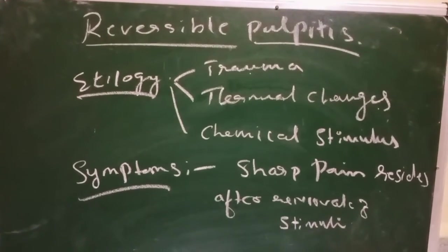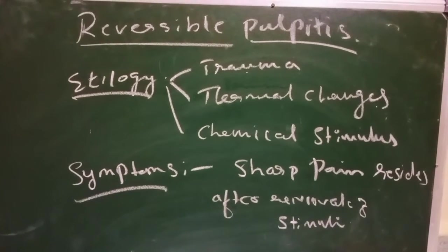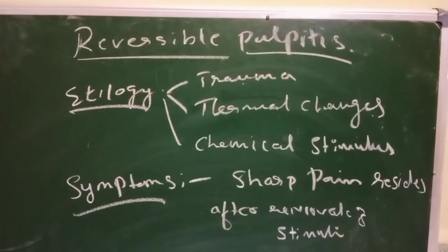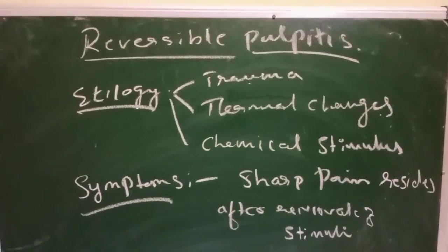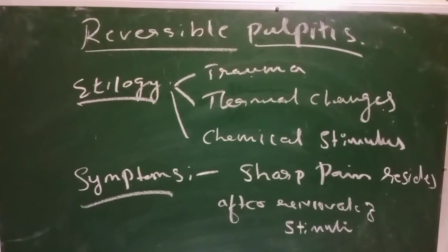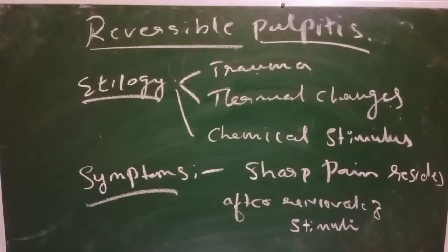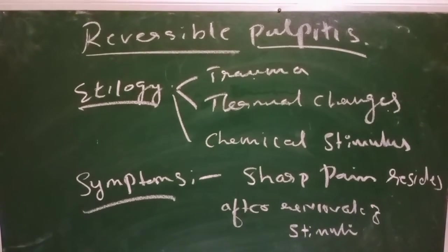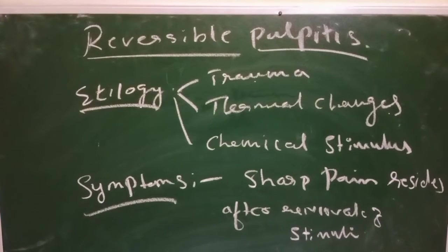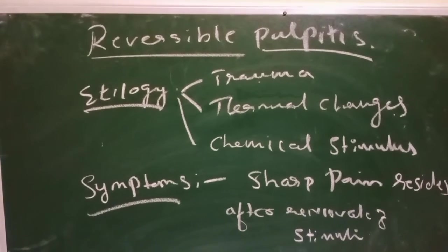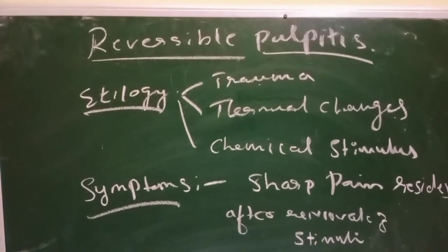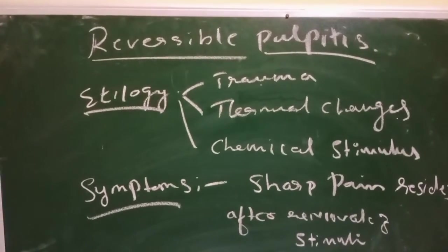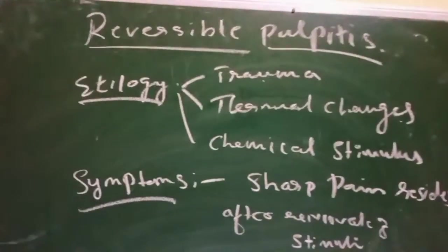First is Reversible Pulpitis. It is also known as Hyperemia or Hyperactive Pulpalgia. Reversible Pulpitis is a mild to moderate inflammation of the pulp caused by noxious stimuli, in which the pulp is capable of returning to the normal state following removal of the stimuli.